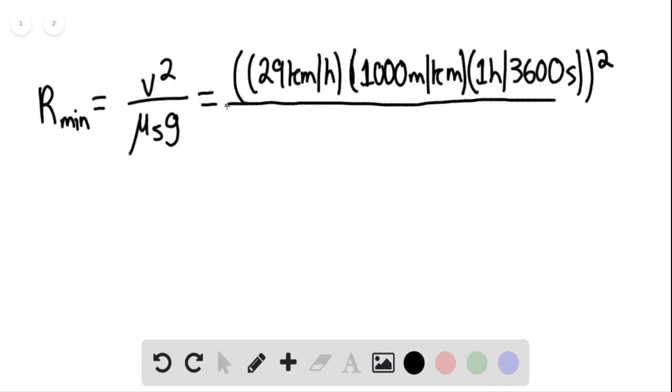This is divided by 0.32 times 9.8 meters per second squared. We find that the minimum radius of the curve equals 21 meters.